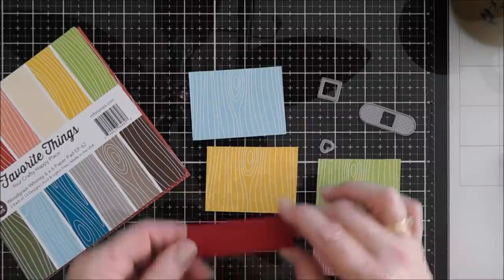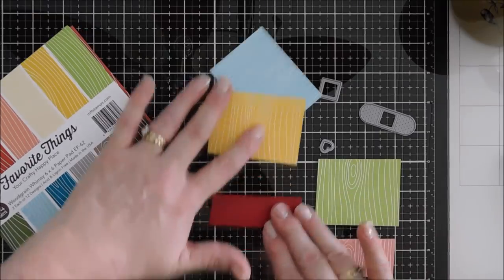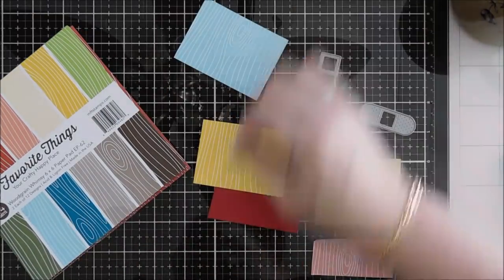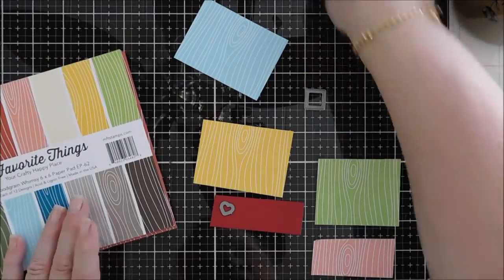I thought we'd go a little different today. We're going to take some red cardstock and take that little heart and we need four hearts. So we'll die cut out four of those.